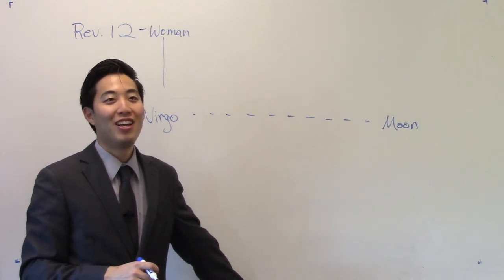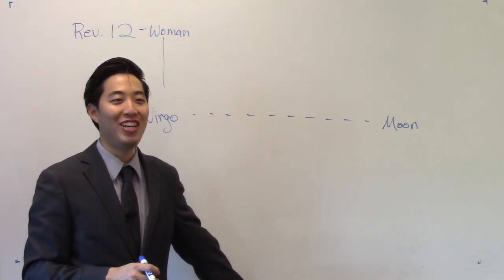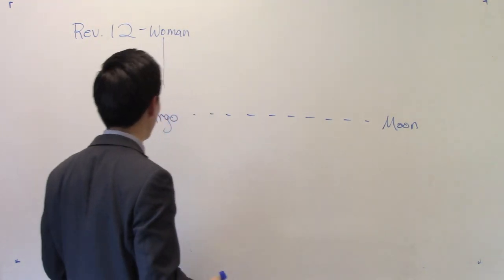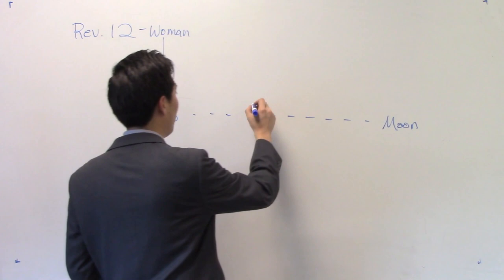Why? Because the lion of the tribe of Judah, Jesus. So then this woman who's giving birth to Jesus Christ, or the man-child, is supposed to be Leo, lion.